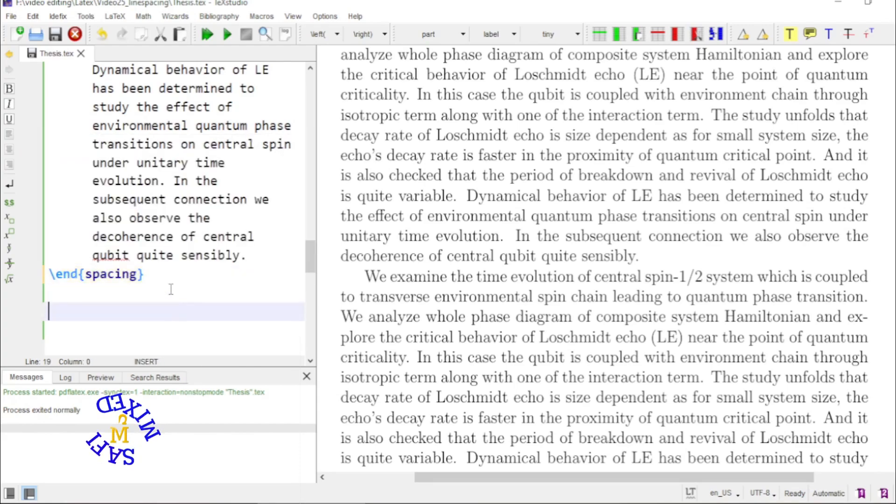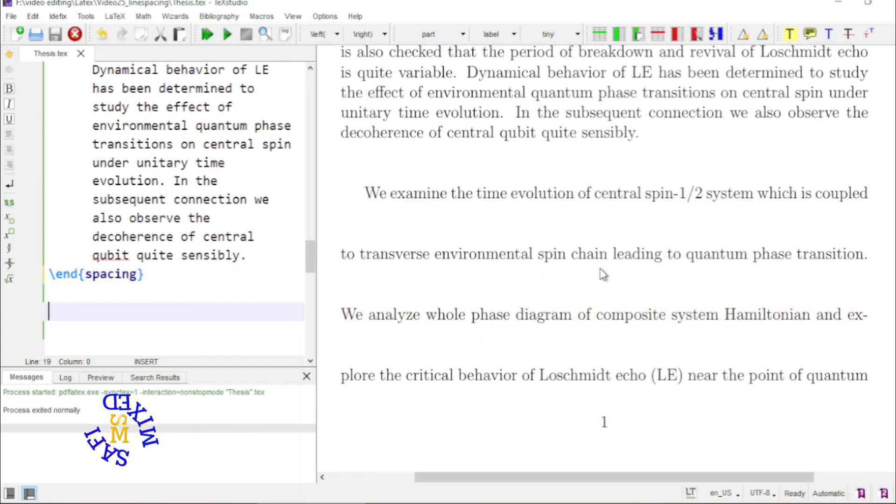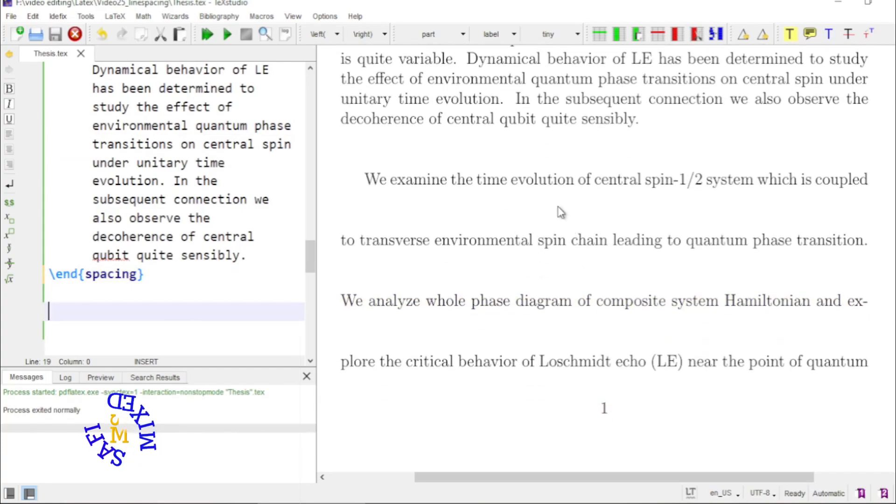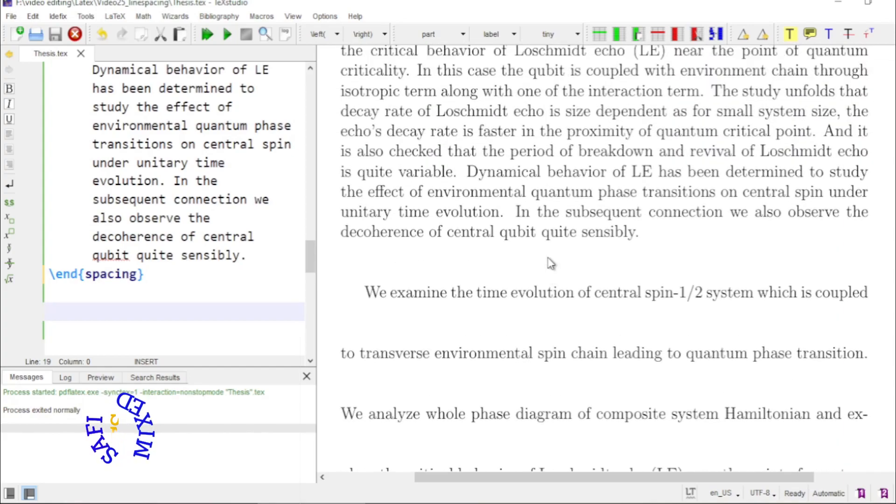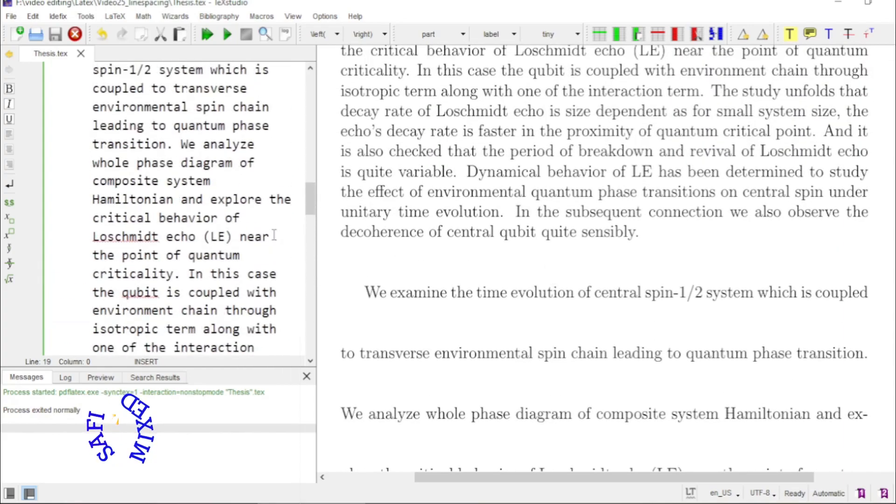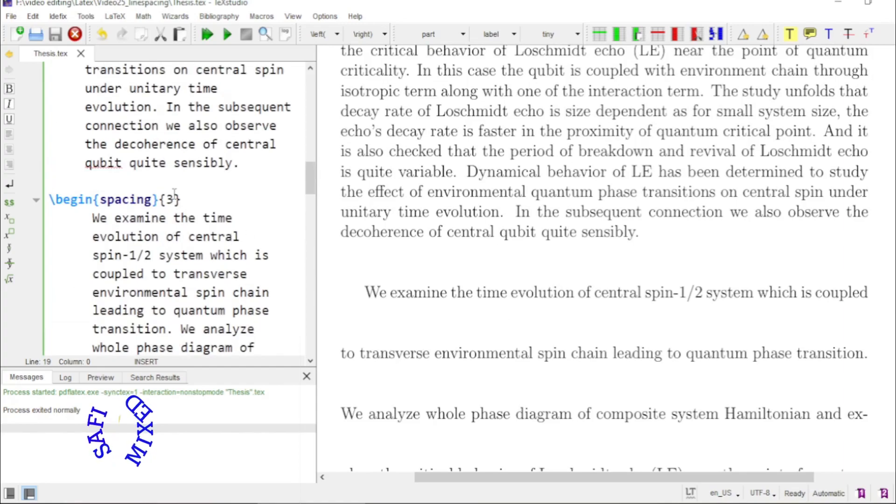If I build the document now you see here the space between the lines is now three times which seems very awkward. I want to reduce this to two and a half by changing the three to two point five.